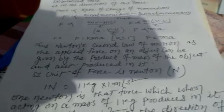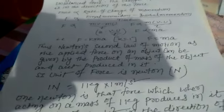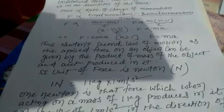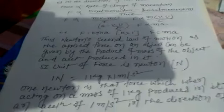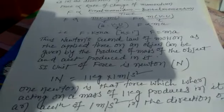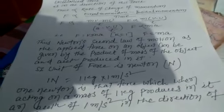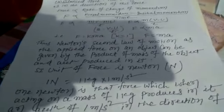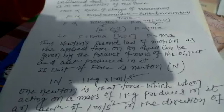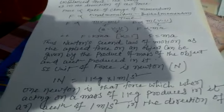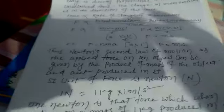One Newton is defined as that force which, when acting on a mass of 1 kg, produces an acceleration of 1 meter per second squared in the direction of the force. So 1 Newton force is defined as when a force causes a 1 kg mass to accelerate at 1 meter per second squared in the direction of the force.